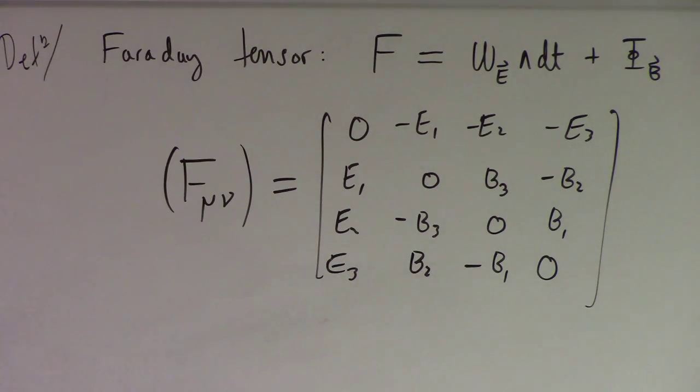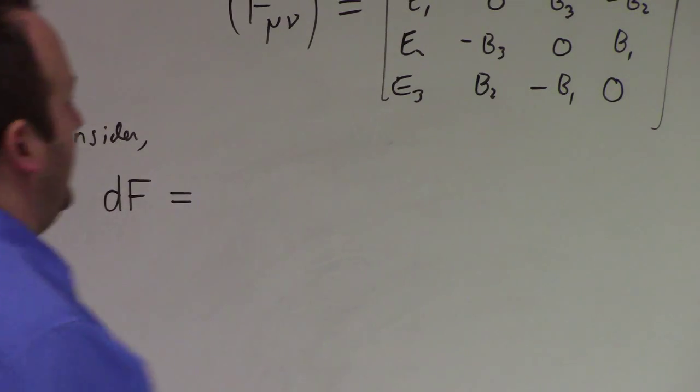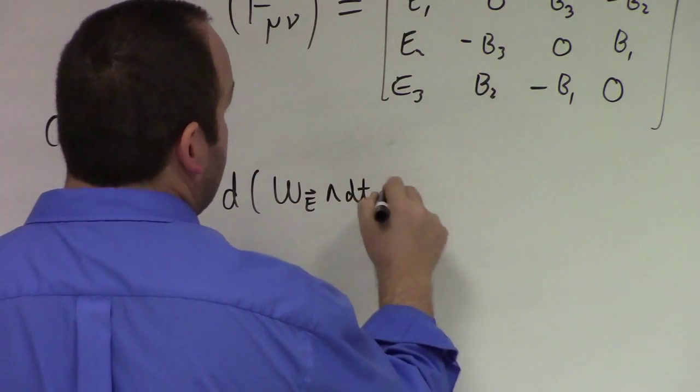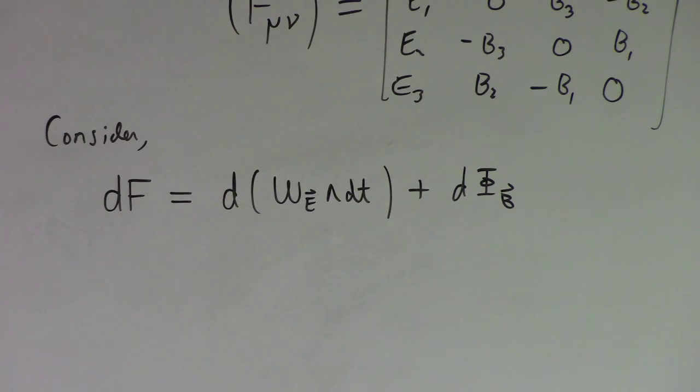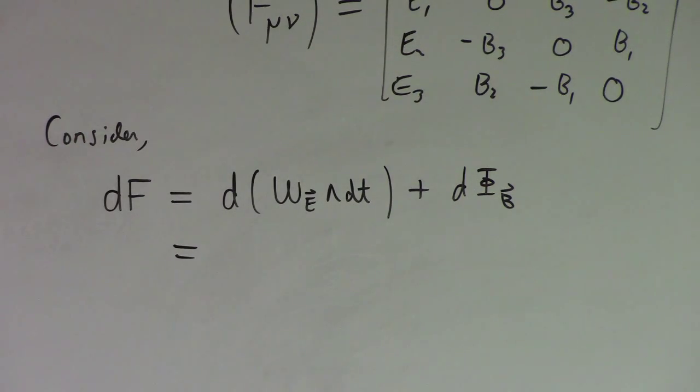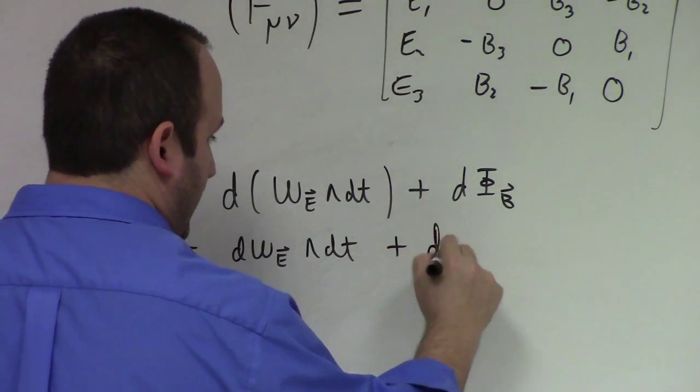So what's the exterior derivative of the Faraday tensor then? What's the exterior derivative of the flux form of the magnetic field? What happens when you have the exterior derivative of something wedge a differential? Basically you can pull the differential out because the differential wedges - I mean d of dt is zero because d squared is zero again. So we just have d omega_E wedge dt plus the differential of the flux form of B.